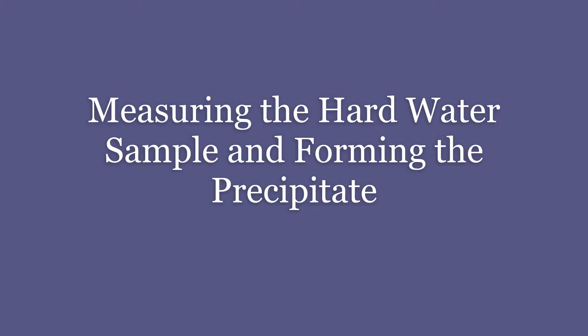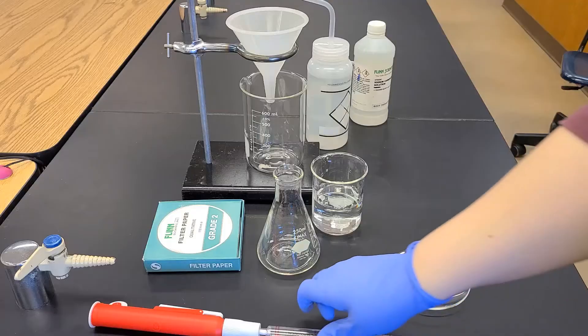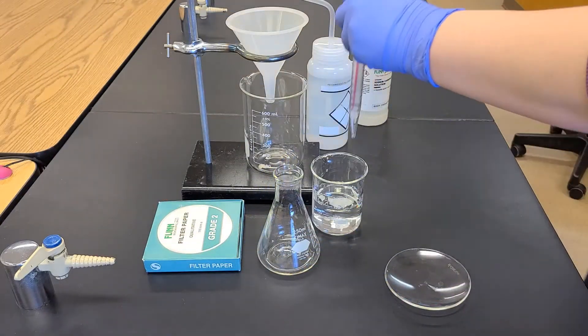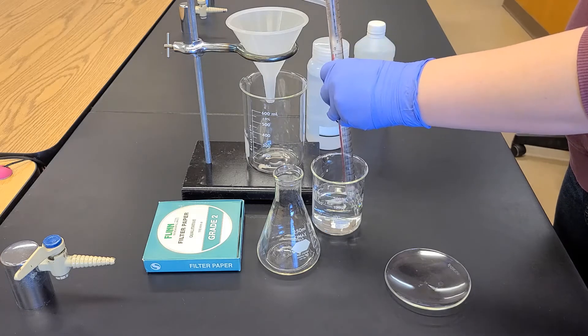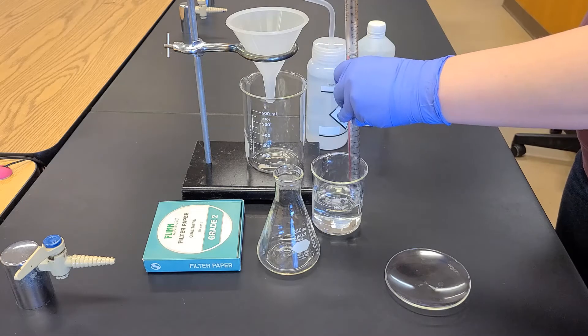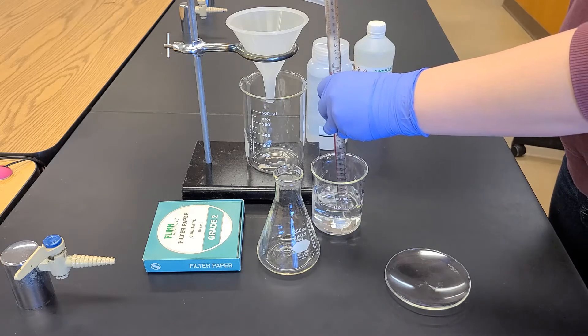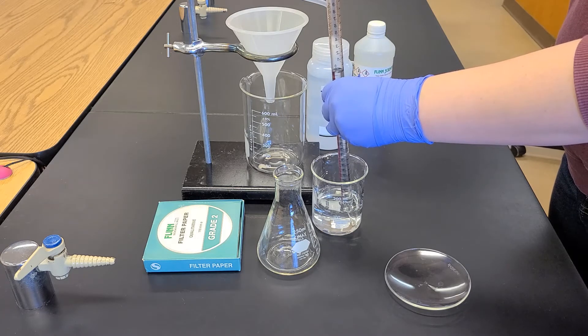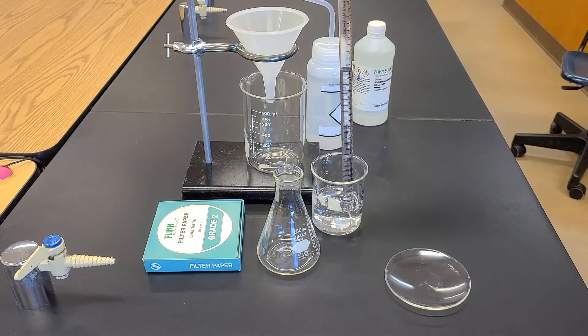The next thing I'm going to do is measure out the sample and form the precipitate. I'm using a pipette to measure out 25 milliliters of my hard water sample, which contains calcium ions. Putting the tip of the pipette under the surface of the liquid, but not on the bottom of the beaker,